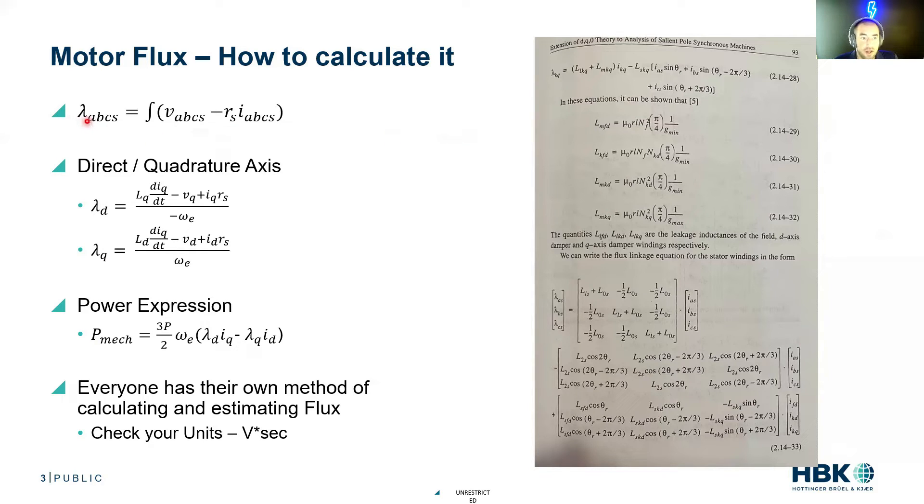At the most simple, our flux of any of A, B, or C phases is equal to the integration of voltage, stator voltage, minus stator resistance times stator current.